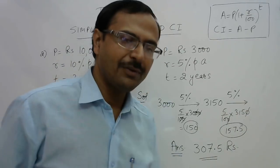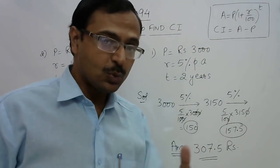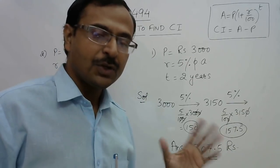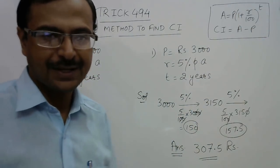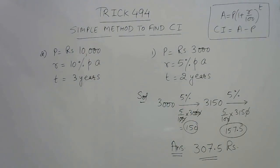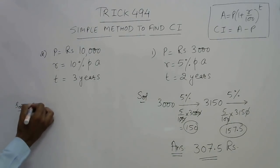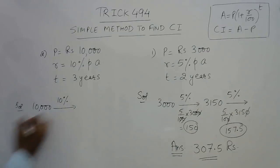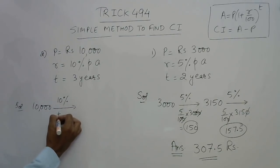This method will find wide application in competitive exams. Even school-level students can use it to verify answers obtained through the traditional formula. Let's try one more question: we have 10,000 rupees at 10% interest. Ten percent of anything is found by placing a decimal one digit from the right, giving interest of 1000 rupees. The amount becomes 11,000.